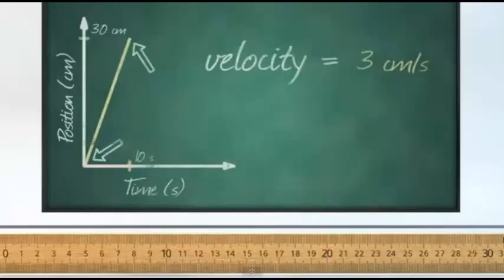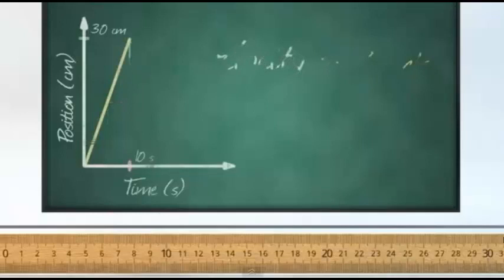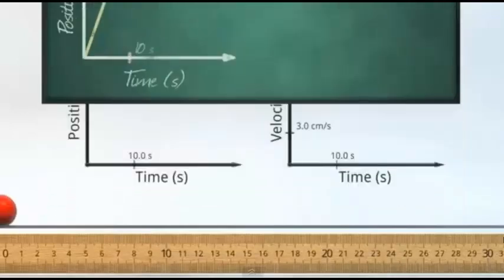So why are we allowed to only look at the starting point and ending point, and forget about everything in the middle? Well, this is because the slope, or steepness of the line, never changed. It's a straight diagonal line from start to finish. No matter what part of that straight line we look at, the slope is always the same. So the ball must be traveling at constant velocity. Let's see what the velocity graph looks like now.